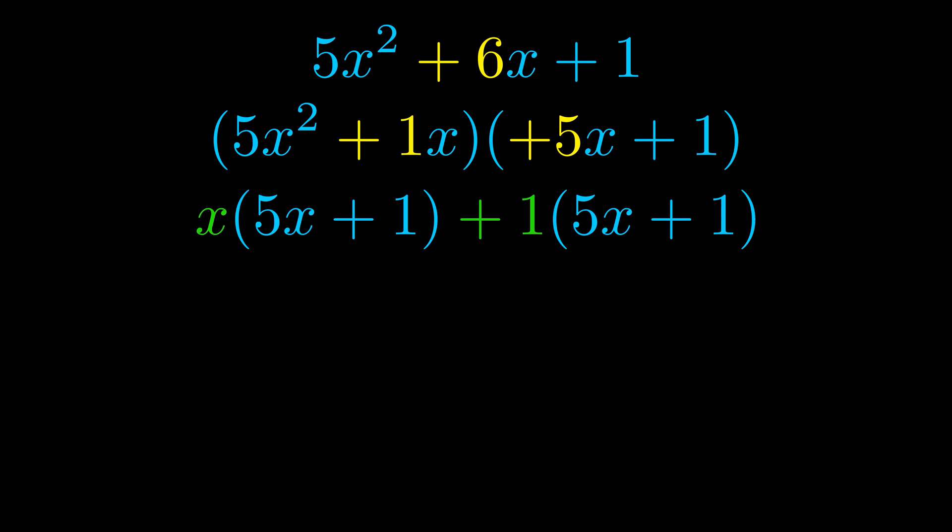Notice also how what remains inside of the parentheses is the same in both cases. The blue values are the same. Those blue values will become one of our factors and we will combine the two green values the GCFs that we pulled out to get the other one. And that is our fully factored equation.